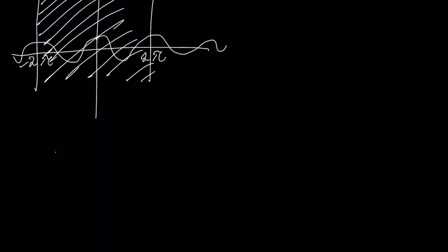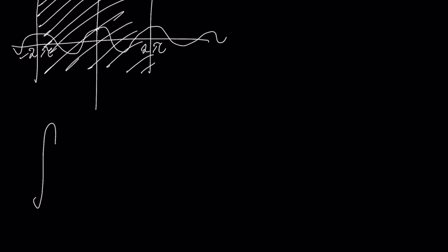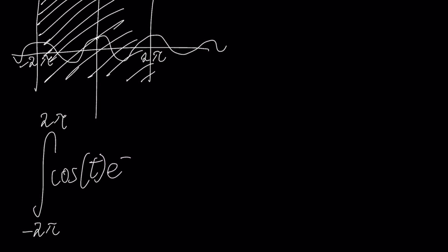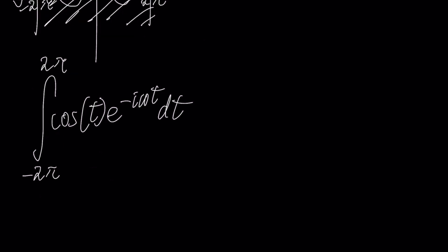So how would we do this? Instead of integrating from negative infinity to infinity, we would just integrate from negative 2π to 2π of cosine of t times e to the negative iωt dt. We can see that two functions are being multiplied together, but there's a much more elegant way to do this as opposed to integration by parts. The key is to use Euler's formula.